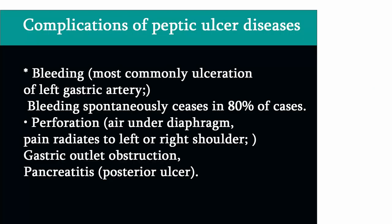Complications of peptic ulcer disease include: bleeding, most commonly from the gastric artery, which spontaneously ceases in 80% of cases; perforation, where pain radiates to the left or right shoulder; gastric outlet obstruction; and pancreatitis.